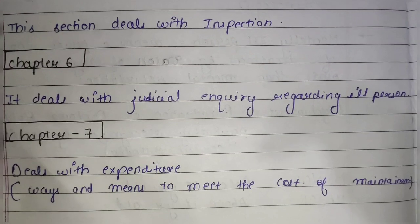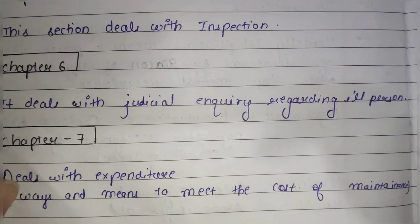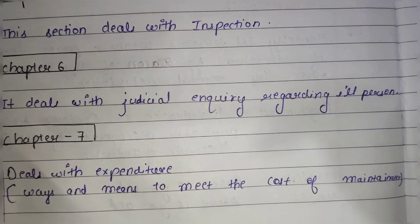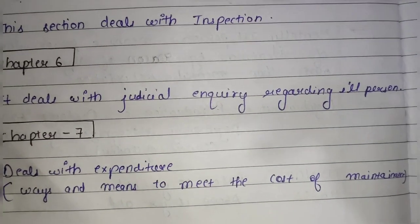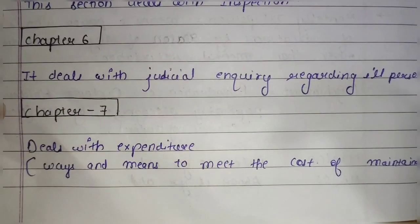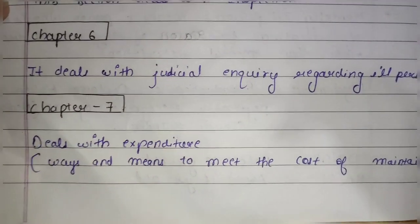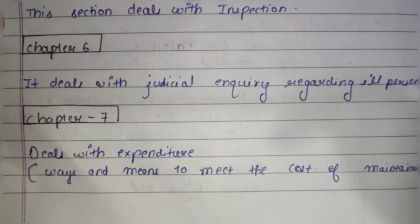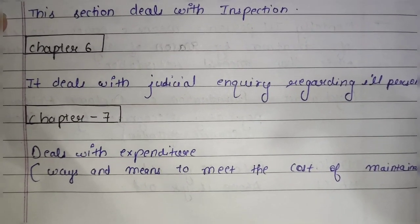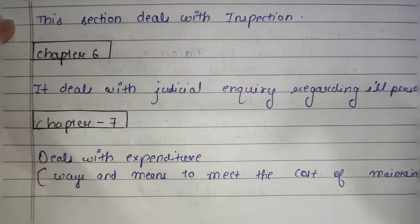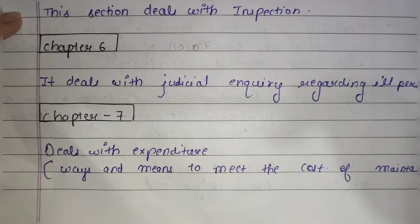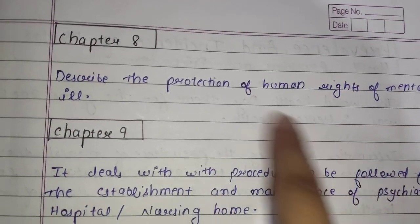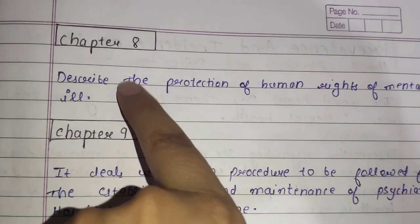Chapter 7 deals with expenditure — the ways and means to meet the cost of maintenance. It deals with how money, time, and energy are utilized within the hospital for the treatment of mentally ill persons.